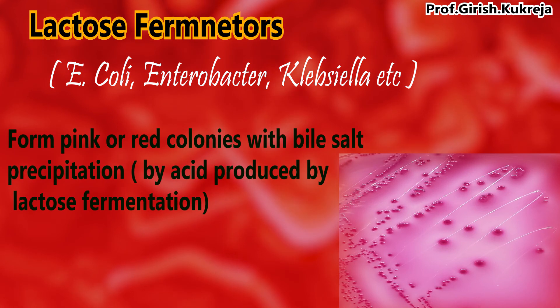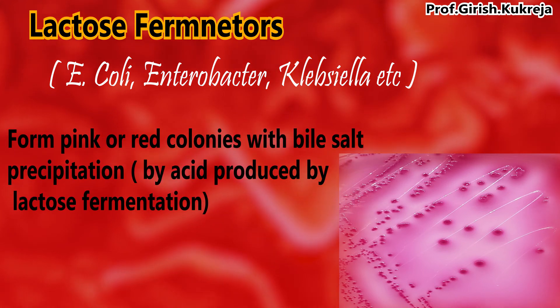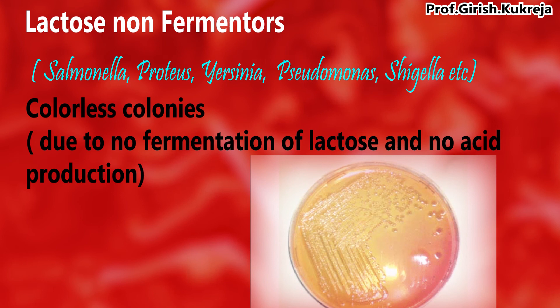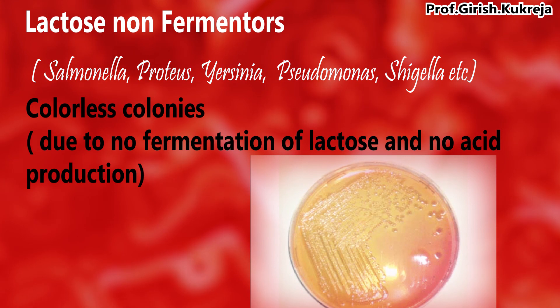Lactose fermenters like E. coli form red or pink colonies surrounded by bile salt precipitate, while non-fermenters like Proteus and Pseudomonas form colorless colonies.